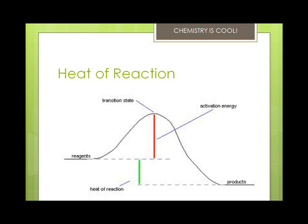The substance or mixture of substances under study in which a change occurs is called the thermodynamic system, or simply system. The surroundings are everything else near the vicinity of that system. Heat is defined as the energy that flows into or out of a system because of a difference in temperature between the system and its surroundings. Heat flows from high temperature to low temperature. Once the temperatures become equal, the heat flow will stop.